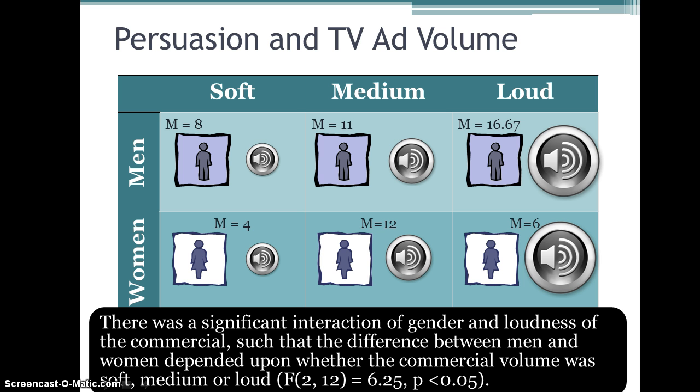And you'll see that I've got this in APA style notation at the bottom where we have that interaction with two between subjects' degrees of freedom and 12 within subjects' degrees of freedom. And then we have our calculated F statistic and P is less than 0.05 because this is statistically significant.